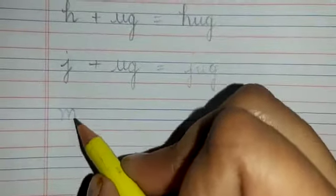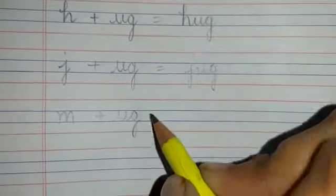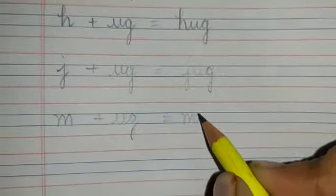Next is mug. M plus UG UG. What word will be formed? Mug.